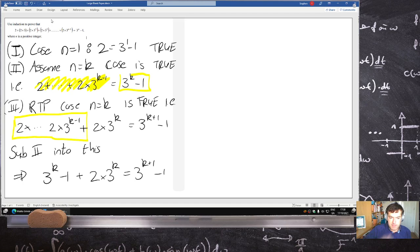And well, they cancel and we'll divide everything by 3 to the k, so we get 1 plus 2 equals 3.